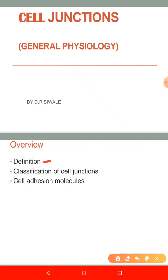An extracellular matrix is a network of extracellular macromolecules, such as collagen, enzymes, and glycoproteins, found outside the cell in the interstitial space. These extracellular matrix components provide structural and biochemical support to the cell.